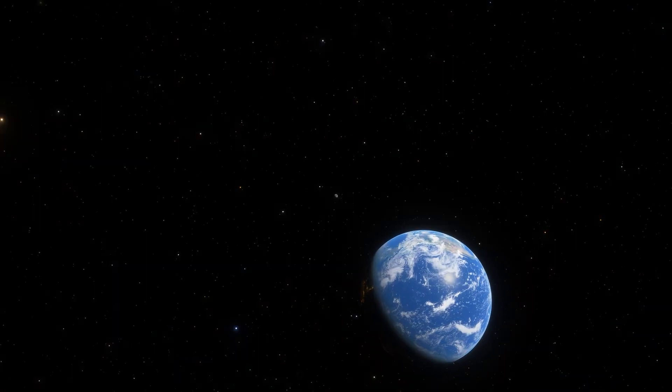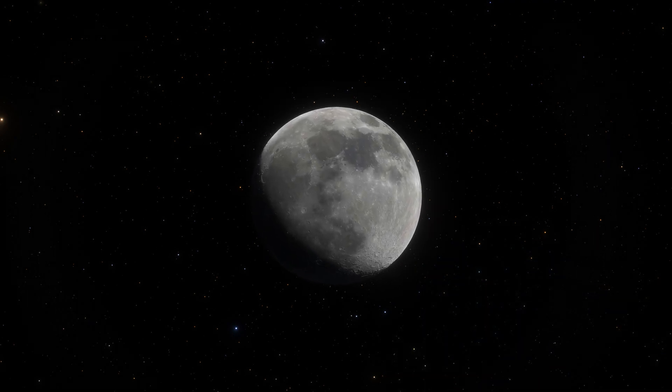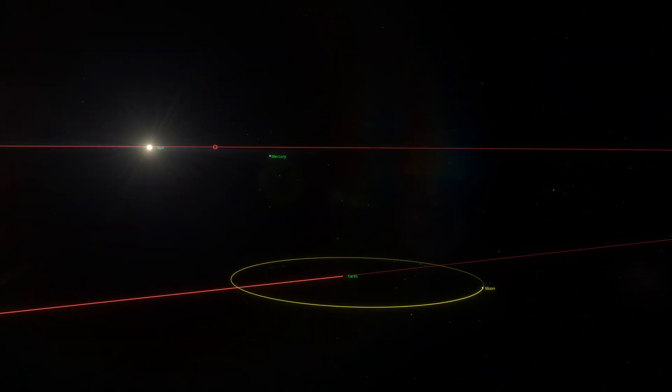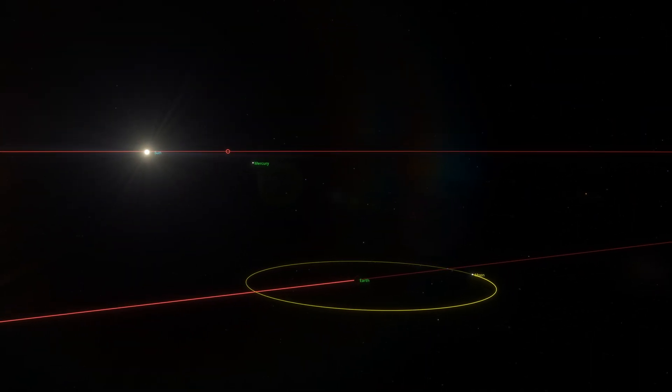But why? Because Earth and the Moon are not a classical two-body system. The Sun's influence makes it more of a simplified three-body system. And when you have such a system, there is always room for chaos.